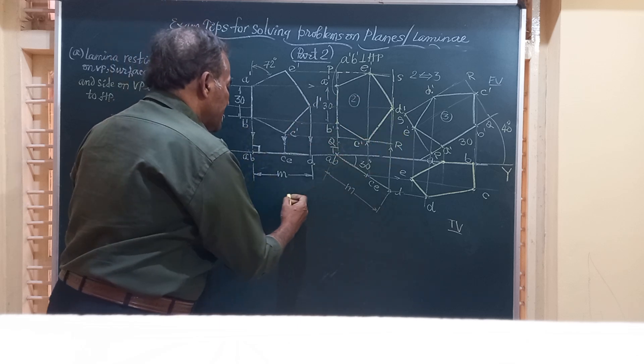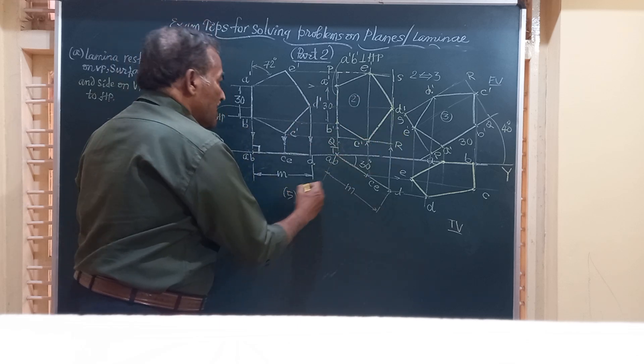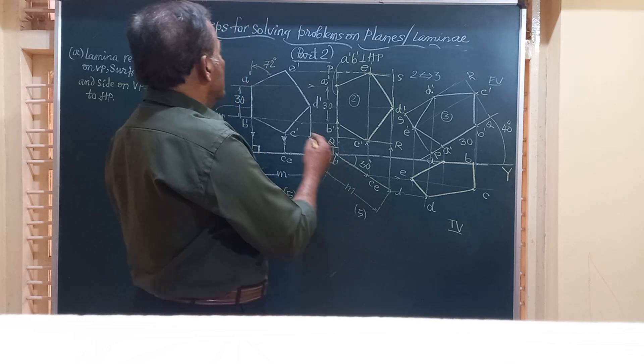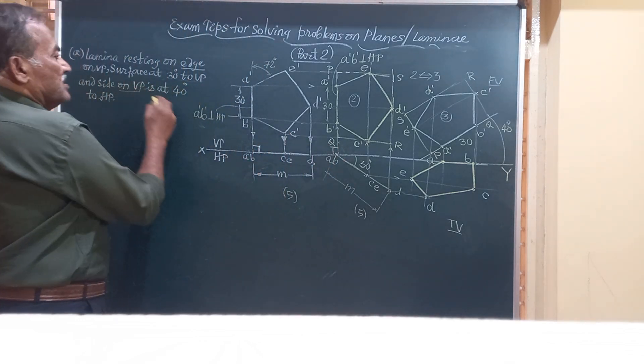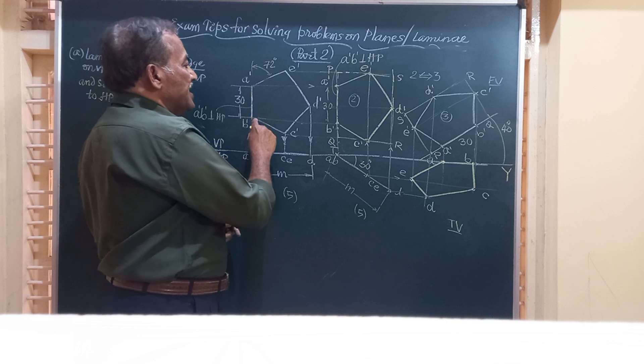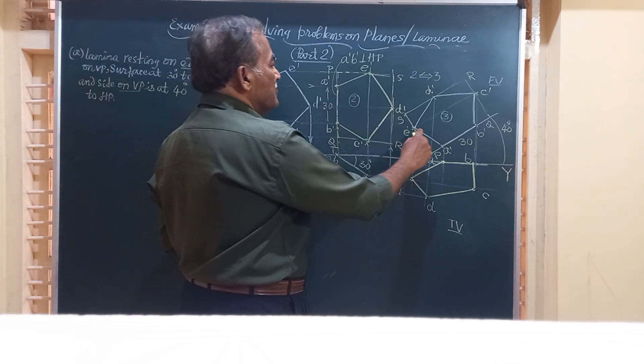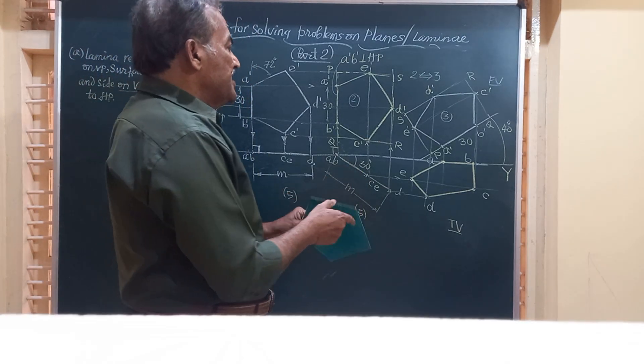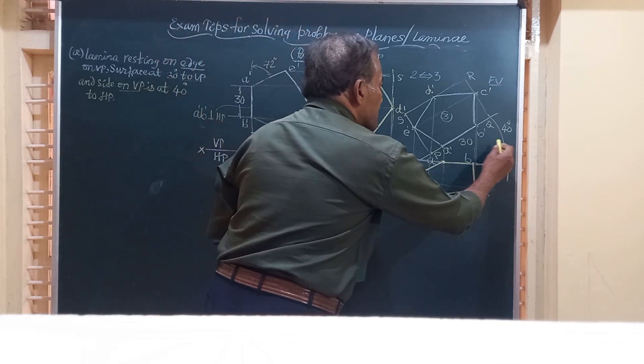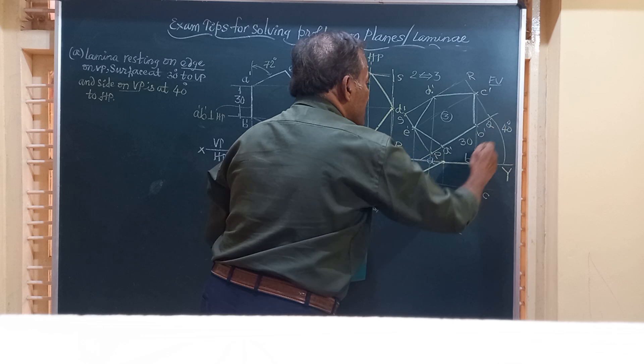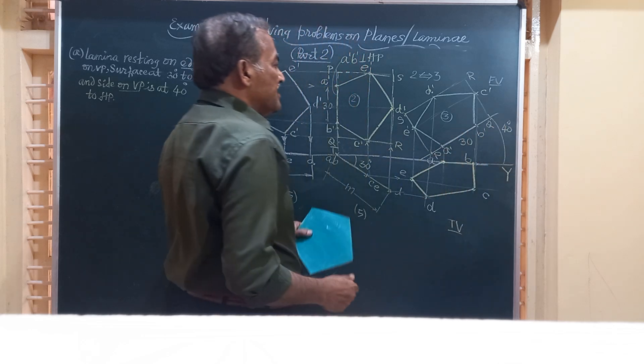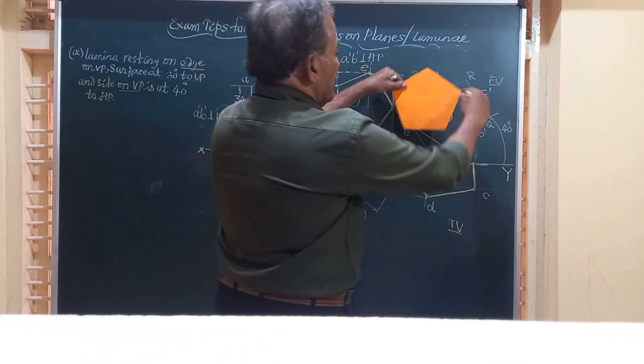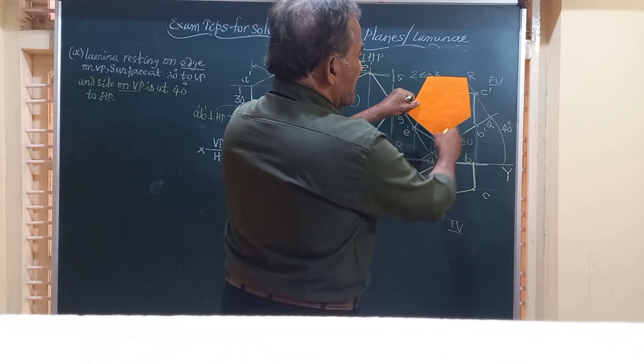In the third step, friends, he says in the question the side on VP, the side on VP is A dash B dash that is perpendicular to HP, but he says it has to be at an angle of 40 degrees to HP. So I have drawn a line here at an angle of 40 degrees. Then whatever the figure I had here like this that has to be kept like this so that that particular edge which is on VP remains same 30 millimeter.